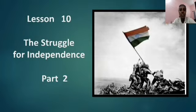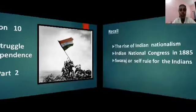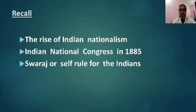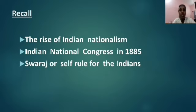It is recalled which we have learnt last class: the rise of Indian nationalism. Unhappy and disappointed with the British rule, a few educated Indians came forward to form the Indian National Congress in 1885. In the beginning, the Congress made moderate demands like the participation of Indians in the government. Later, some members started demanding Swaraj or self-rule for the Indians.